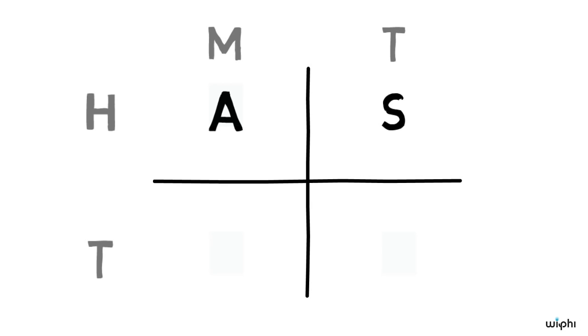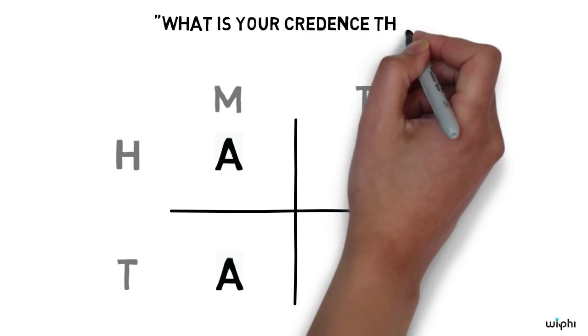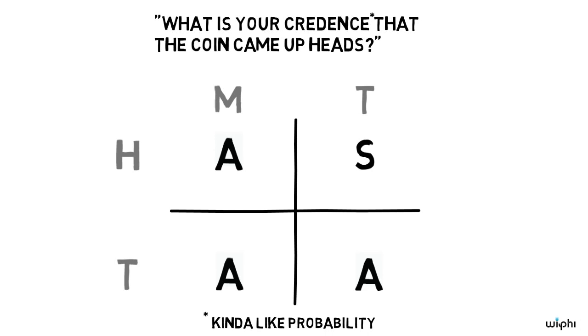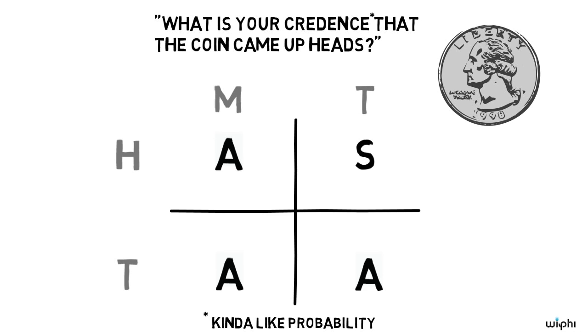Now the first time we wake sleeping beauty up, we ask her the following question: What is your credence that the coin came up heads? Credence just means something like probability. So the question is basically, what do you think the chance is that the coin came up heads? Now you might think that the answer is clearly one half. After all, the coin was fair.